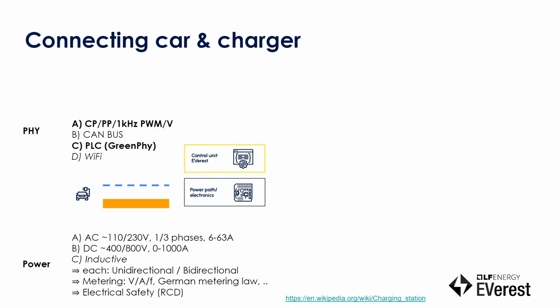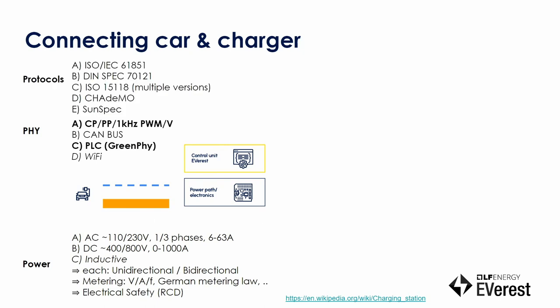On top of that, you also have a data link — there's a physical layer for how you can transfer information between car and charger. There's a really dumb version where you just have a PWM signal, which is often used, but there's also way more smart stuff where you're exchanging XML messages in a really weird format. This is just an extract of the different protocols you have, and this is just one link.